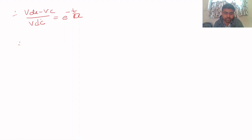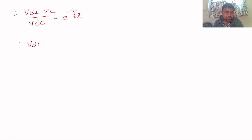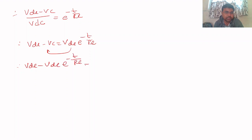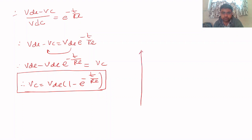From (VDC - VC)/VDC = e^(-T/RC), we get VDC - VC = VDC·e^(-T/RC). Taking this to the other side: VC = VDC·(1 - e^(-T/RC)). This is the equation for capacitor voltage when connected across a constant DC source.